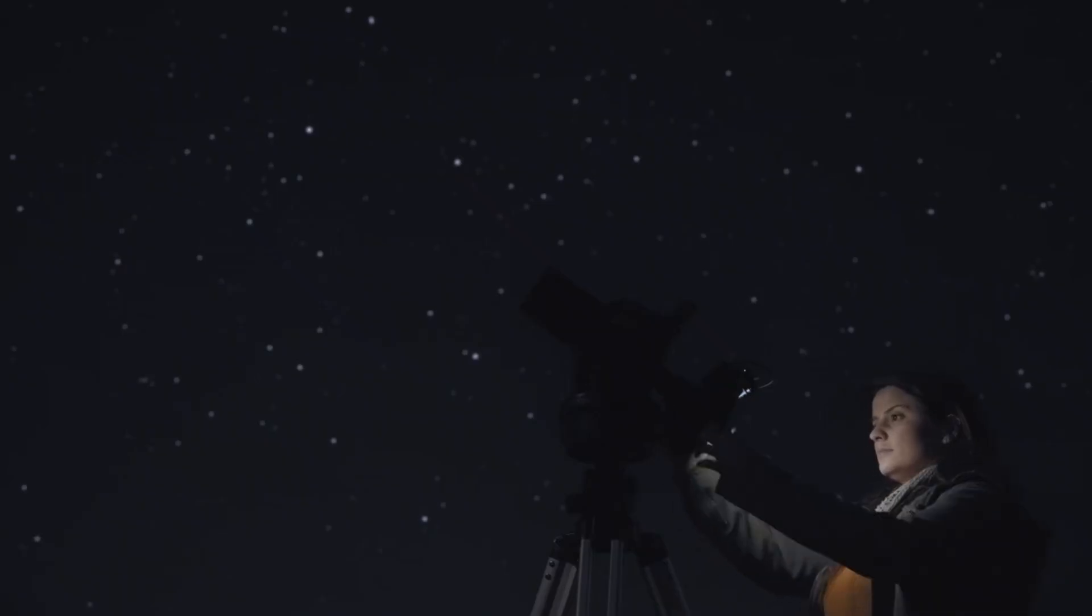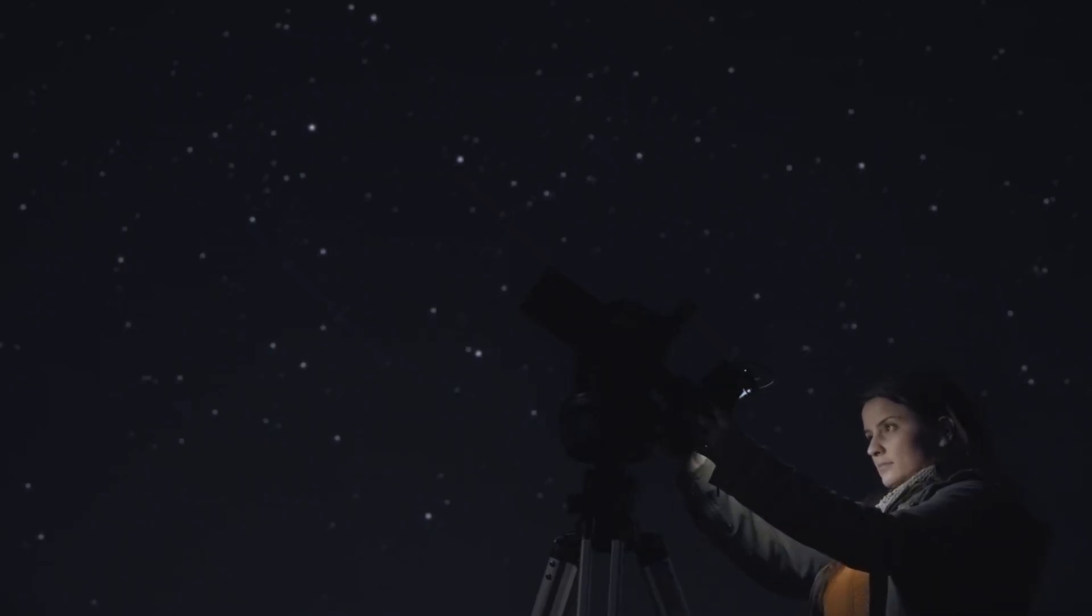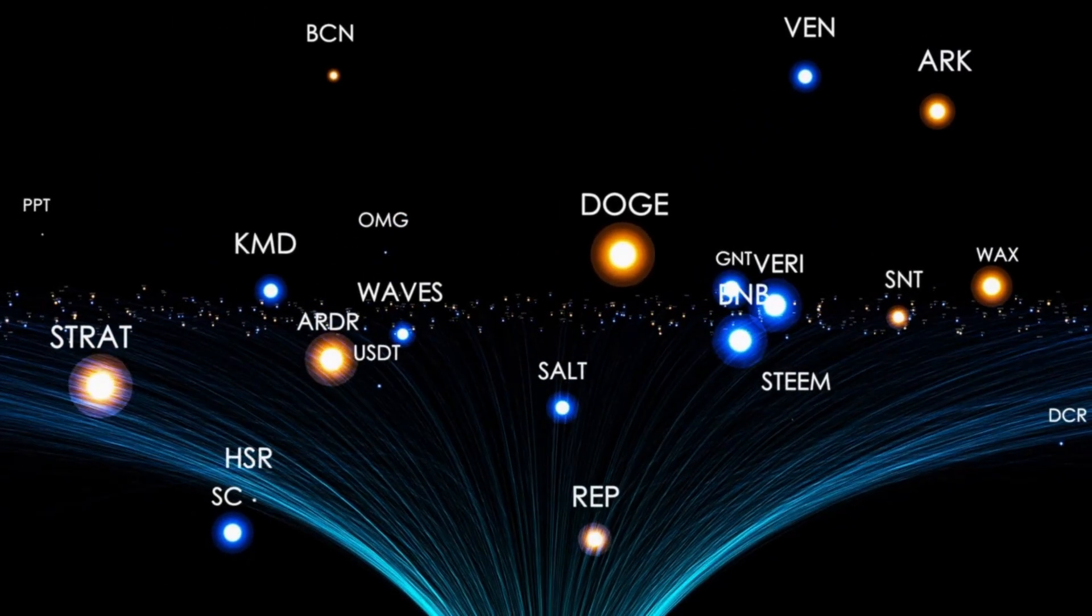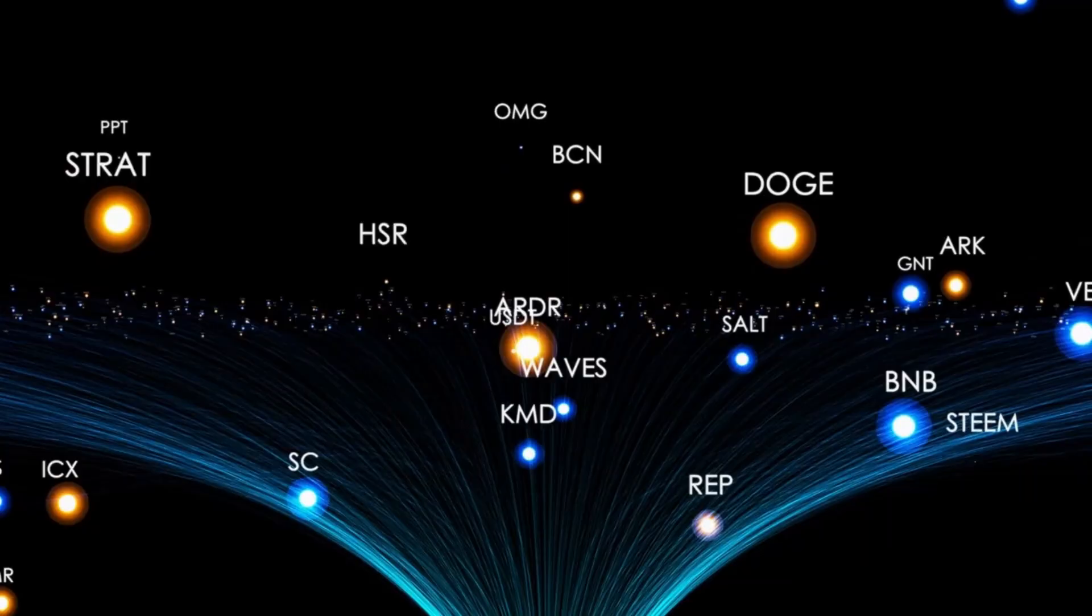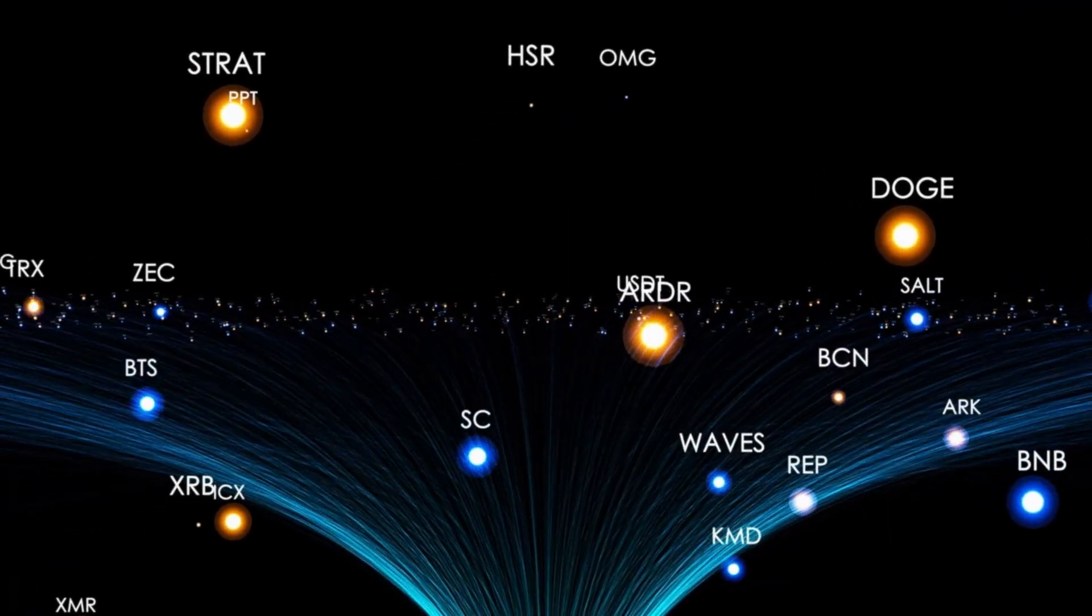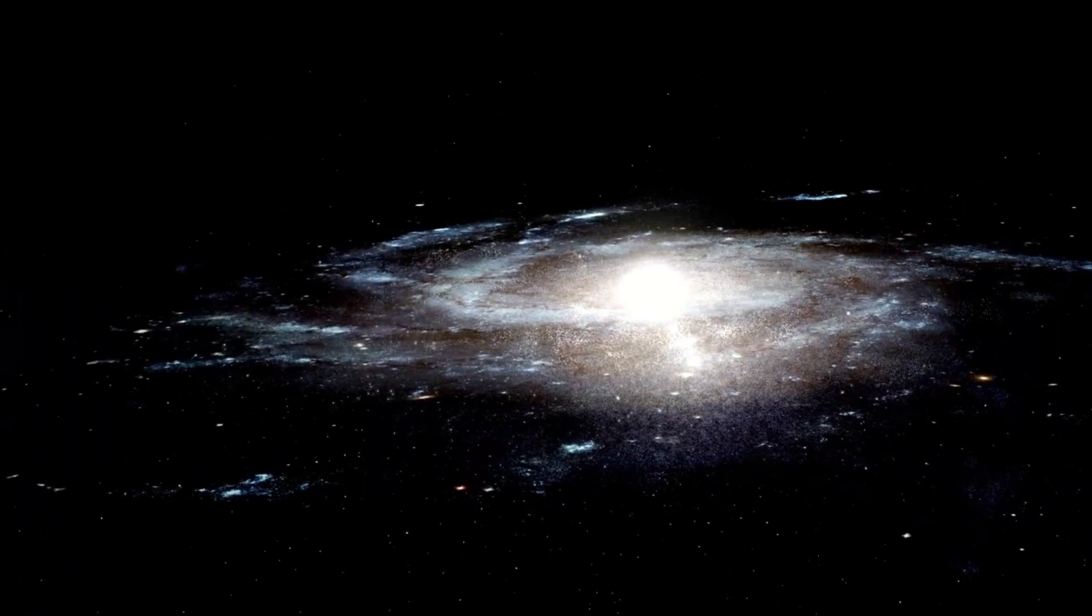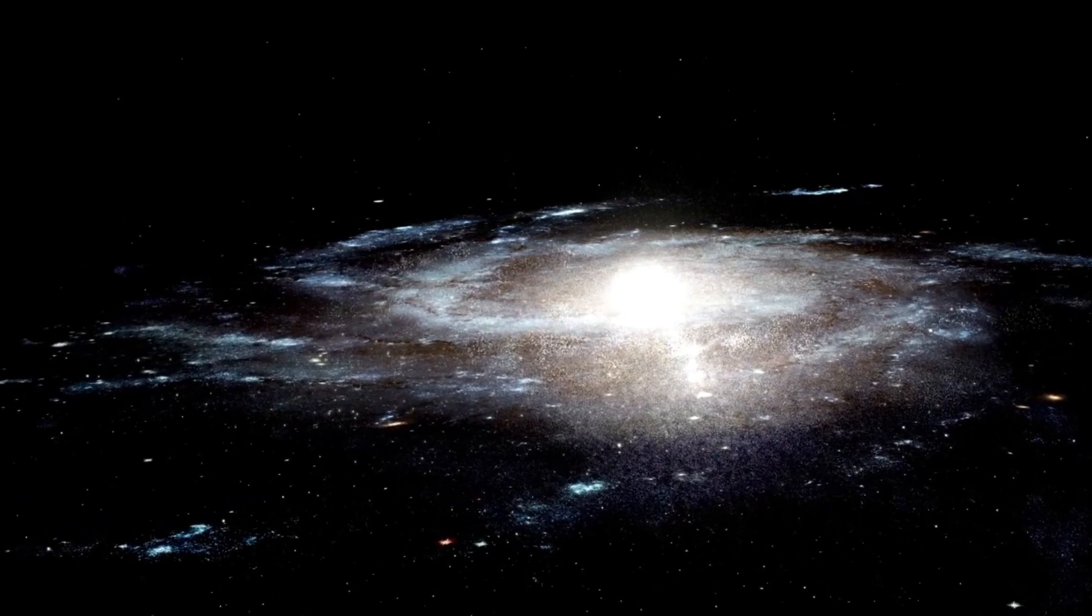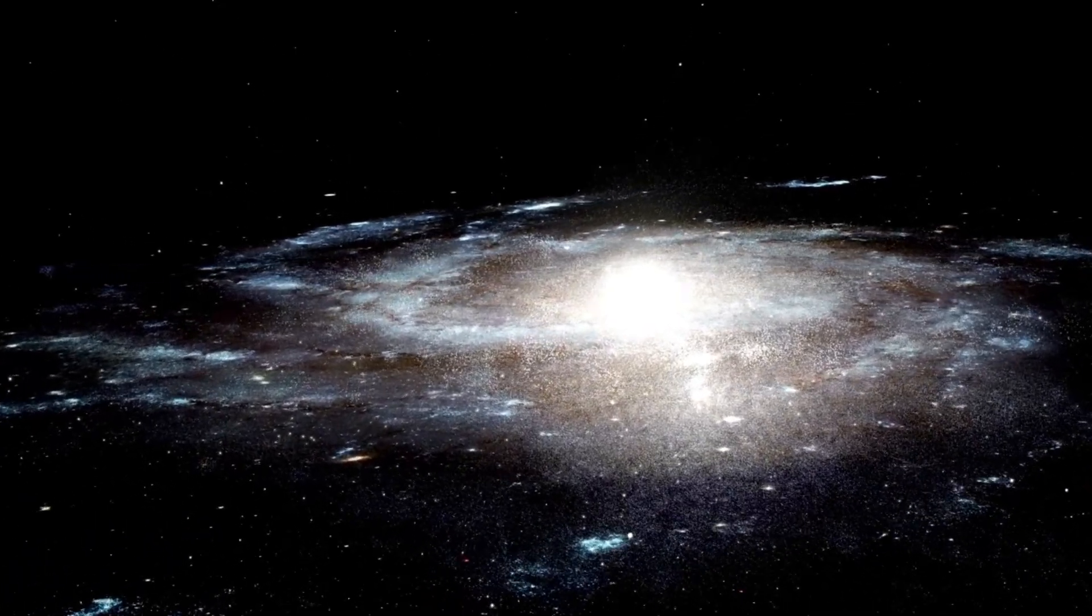Even more astonishing is that this early galaxy appears to be as massive as our Milky Way and already harbors stars that have produced as much carbon and oxygen as those in our galaxy today, despite being only a tenth of its age. Such findings suggest that galaxy formation and chemical evolution may have proceeded far more rapidly in the early universe than previously thought.